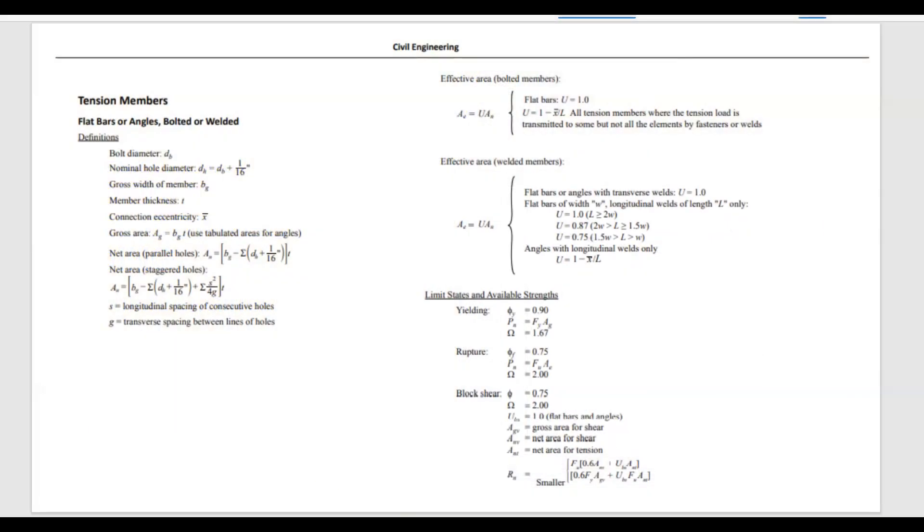In the next few weeks, we are going to talk about structural design of tension members and steel connections. Specifically, we're going to talk about the three main failure modes which are given to you in the FE handbook under the Civil Engineering chapter.